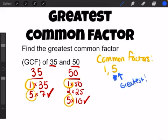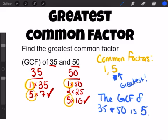So what that means is that the greatest common factor, or the GCF, of these two numbers, 35 and 50, is 5. It's the largest number that both of these numbers have in common when you're breaking it down. Alright guys, thanks for watching, see you in the next video.